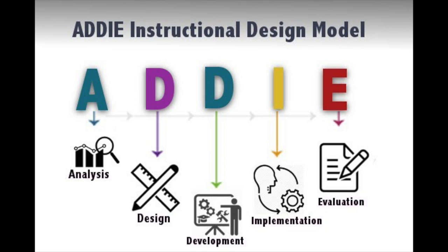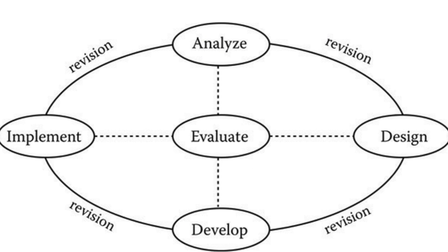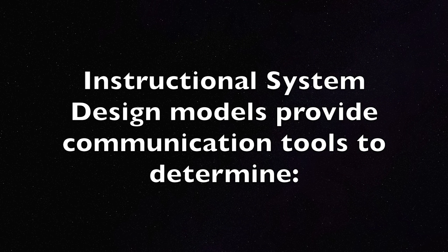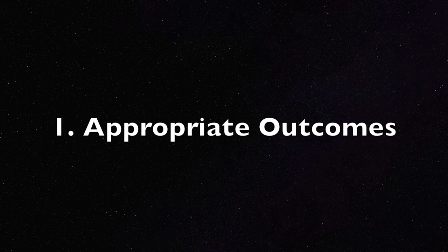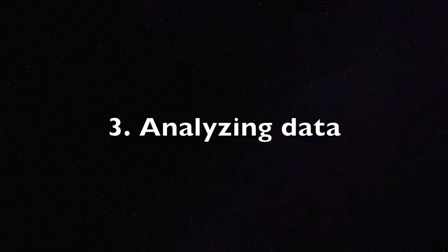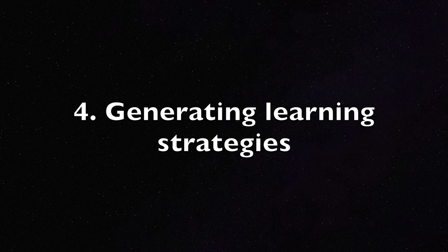A for analysis, D for design, D for development, I for implementation, and finally E for evaluation. Instructional system design models provide communication tools to determine: 1. Appropriate outcomes, 2. Collecting data, 3. Analyzing data, and 4. Generating learning strategies.